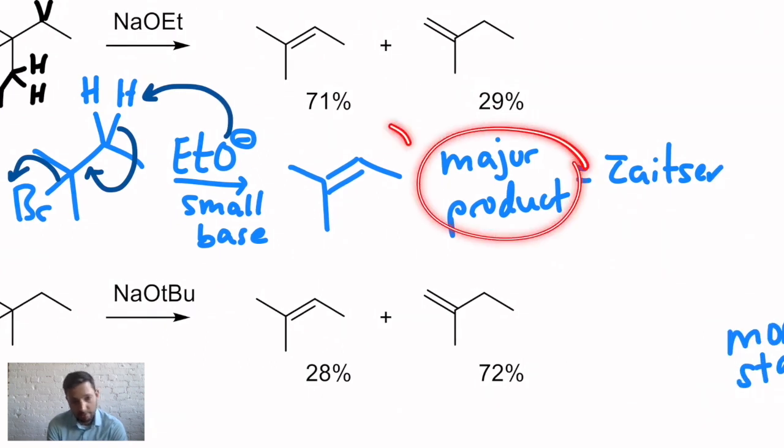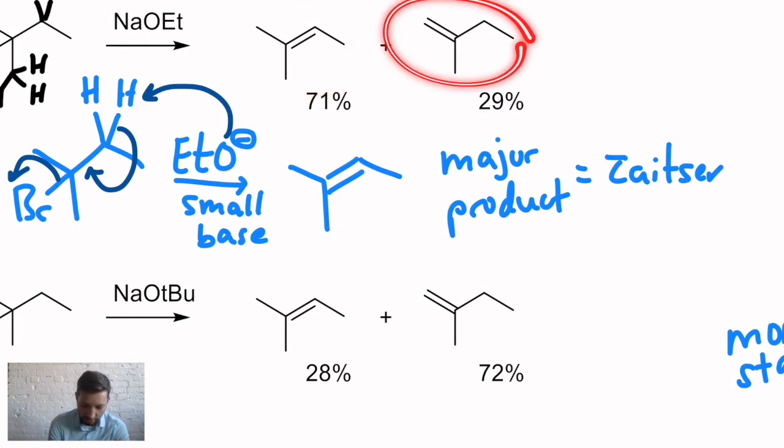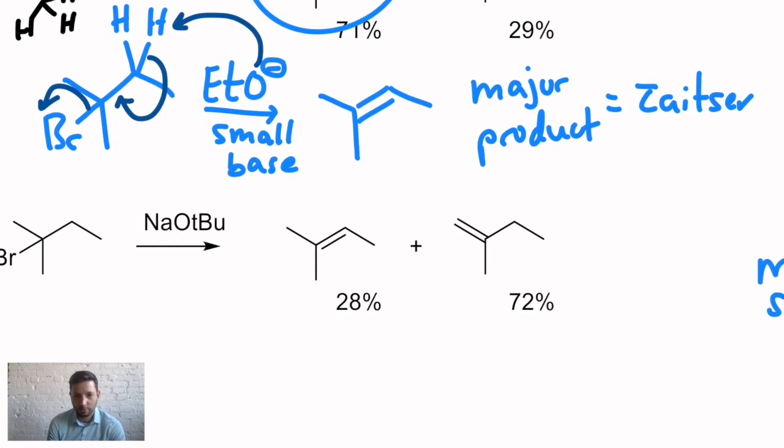And this is a thermodynamic reaction where you will get the major product that is the more substituted. So here we have a trisubstituted alkene as opposed to a disubstituted alkene. So that's the major product that we see with this. However, the beauty of this is we can turn it around. We can force the reaction to give us the less substituted, what's called the non-Zaitsev alkene.